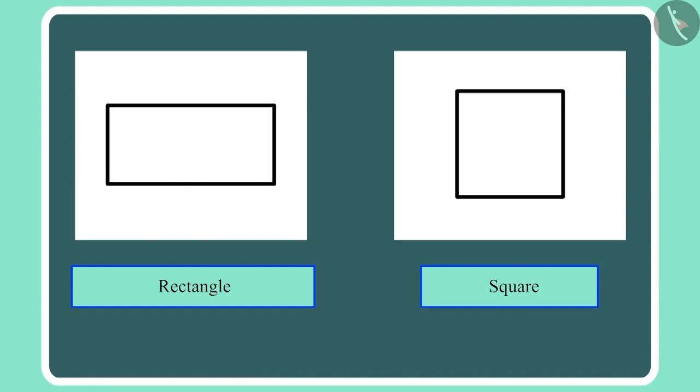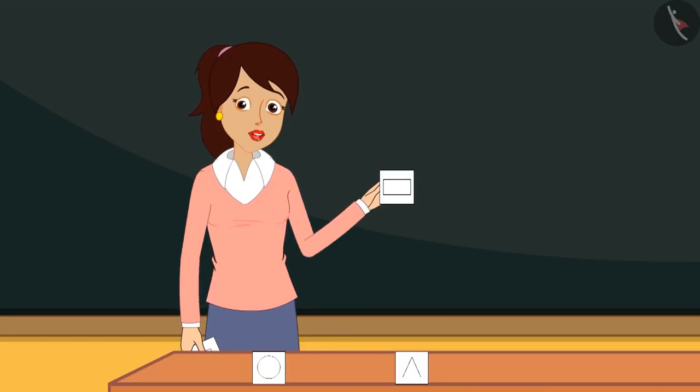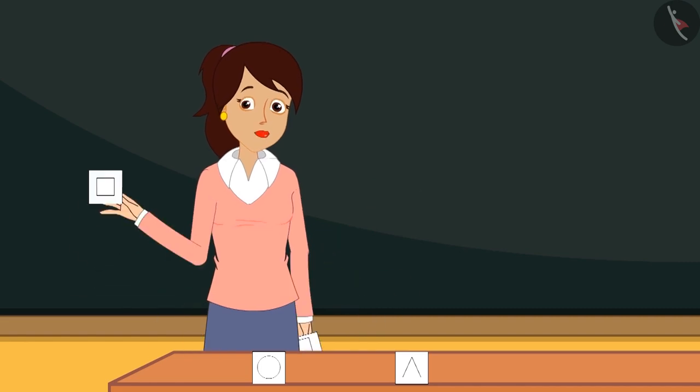And here in this shape, all four lines are not equal. Only the lines opposite to each other are equal. The length of the adjacent lines are different. We call this rectangle. Like this is rectangle. And this is square.